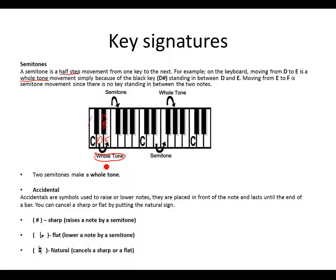A semitone would be moving from E to F, because there is no key we're jumping in the middle — it's a half step movement, which is the semitone. A whole step movement means we've jumped one key; a half step movement means we didn't jump any. Two semitones make one whole tone.